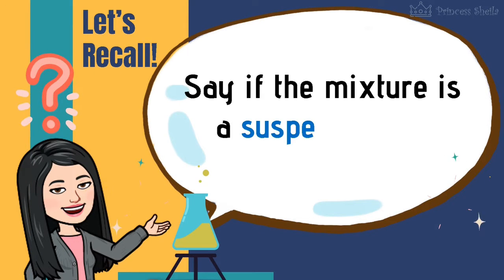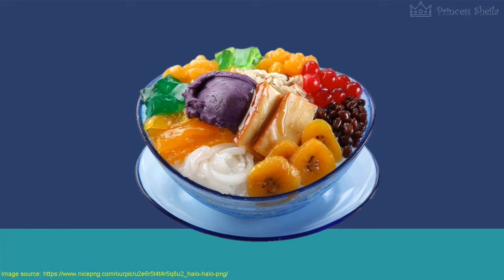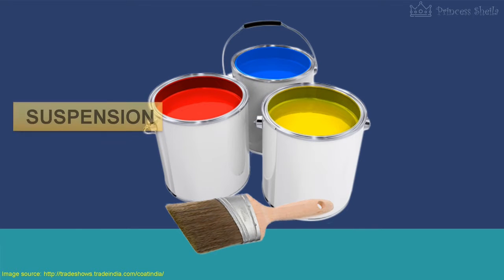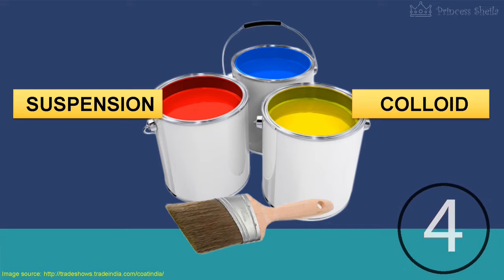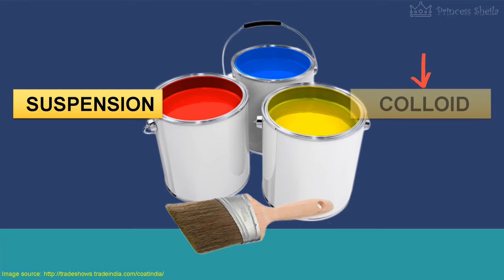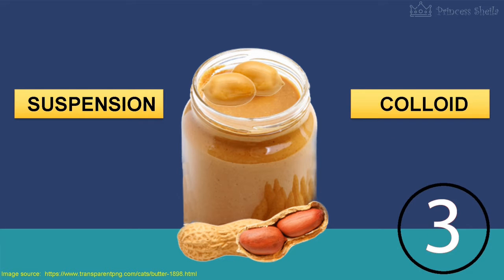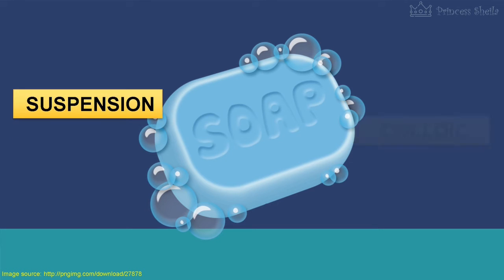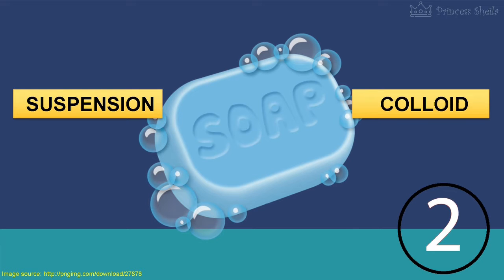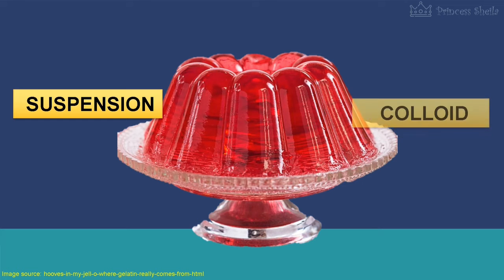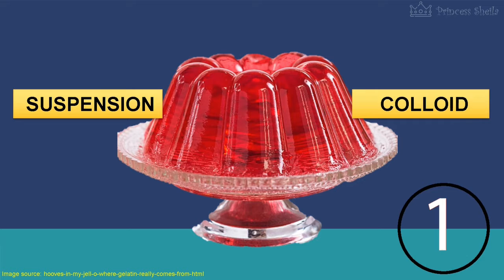Say if the mixture is a suspension or colloid. Halo-halo — is it suspension or colloid? Suspension. Paints — is it suspension or colloid? Colloid. Peanut butter — is it suspension or colloid? Suspension. Soap — is it suspension or colloid? Colloid. Gelatin — is it suspension or colloid? Colloid.